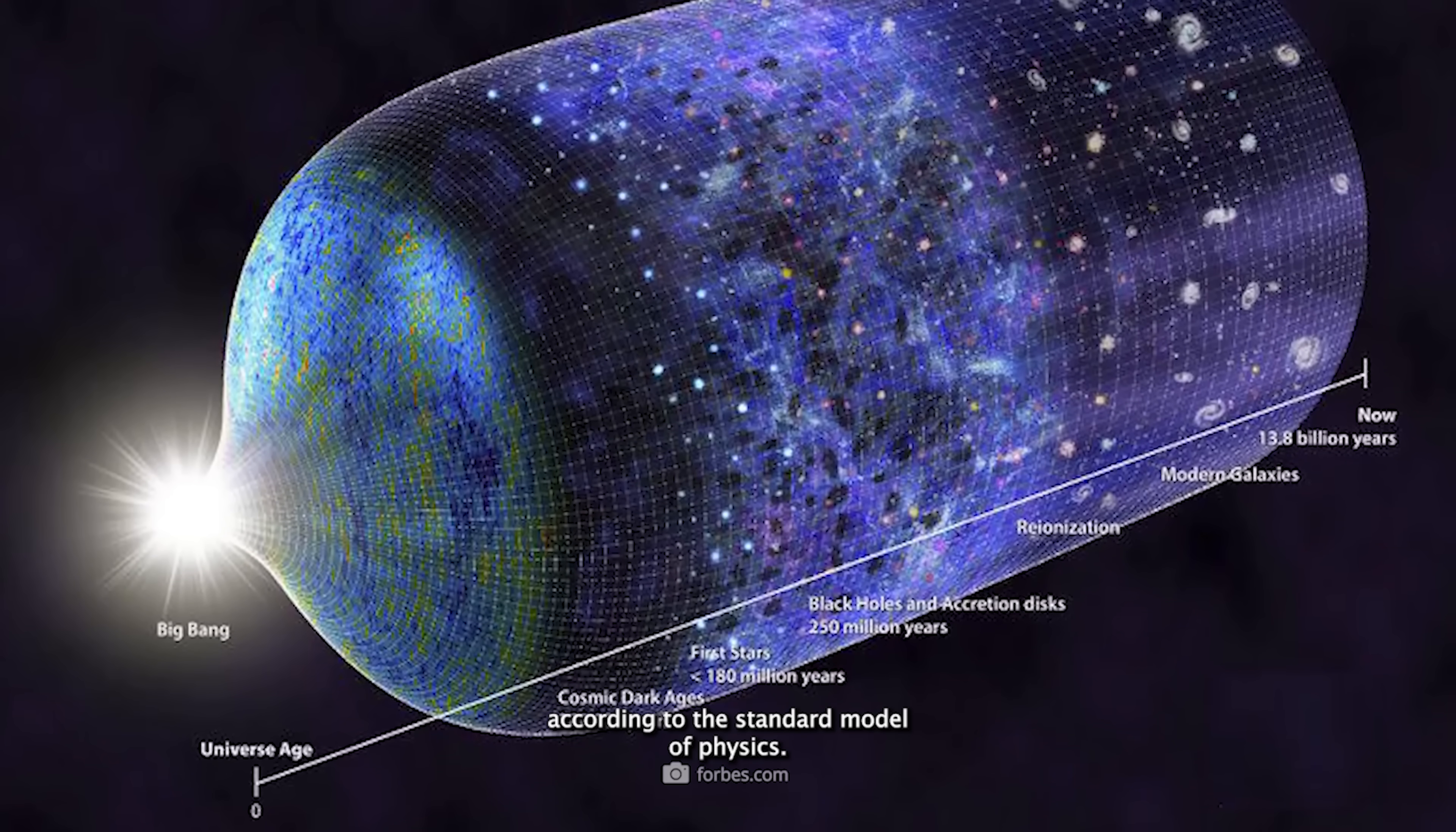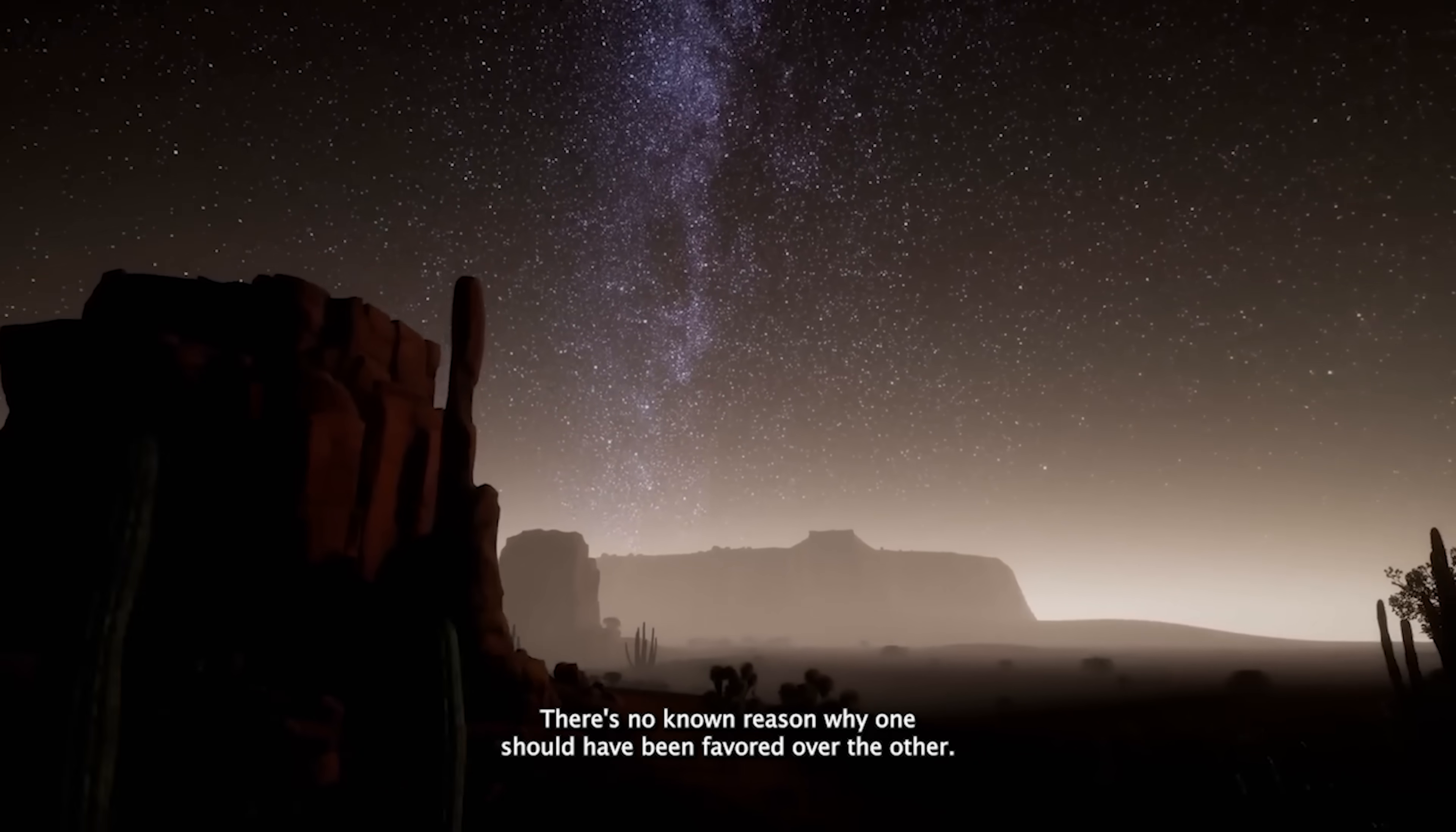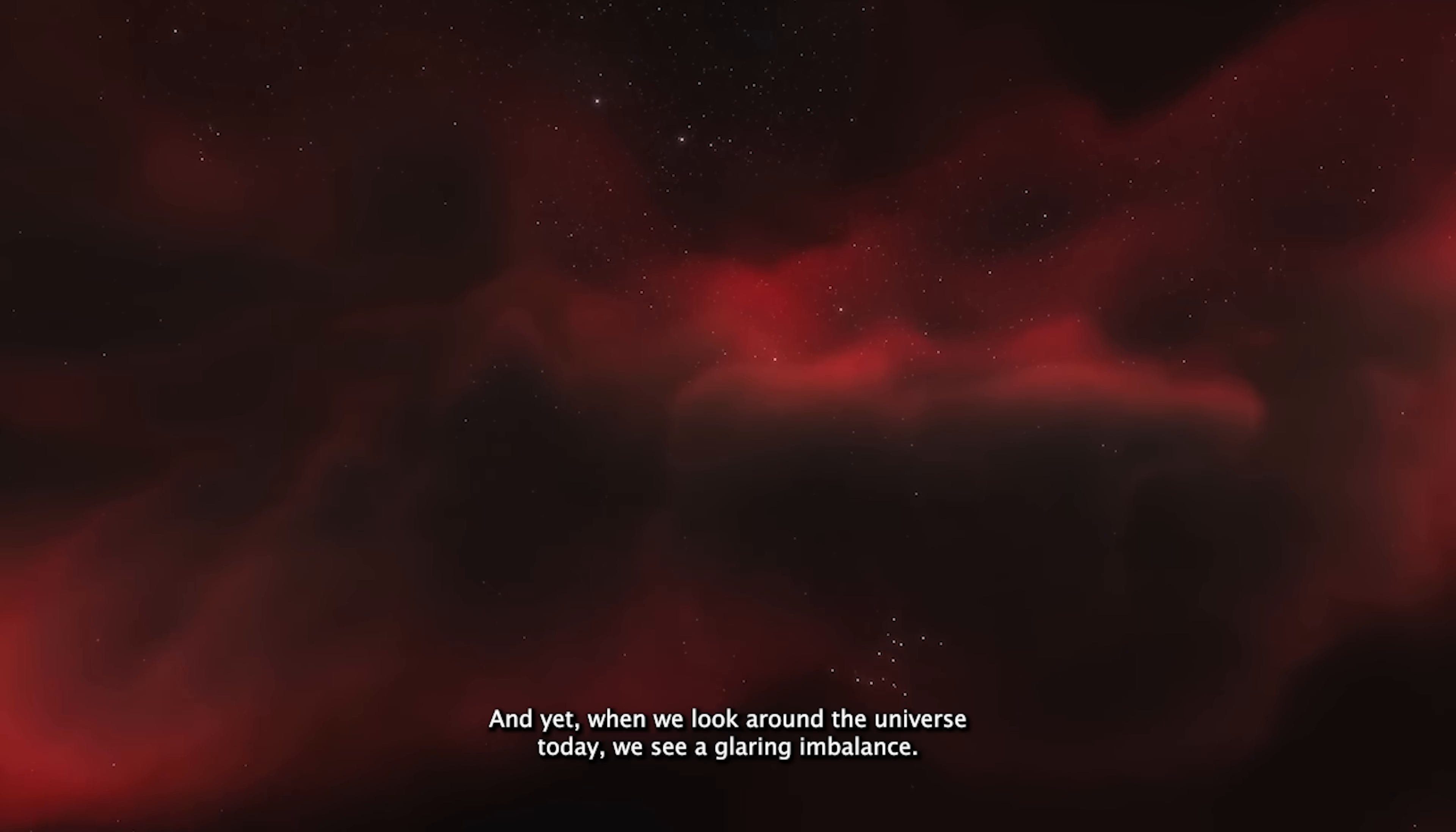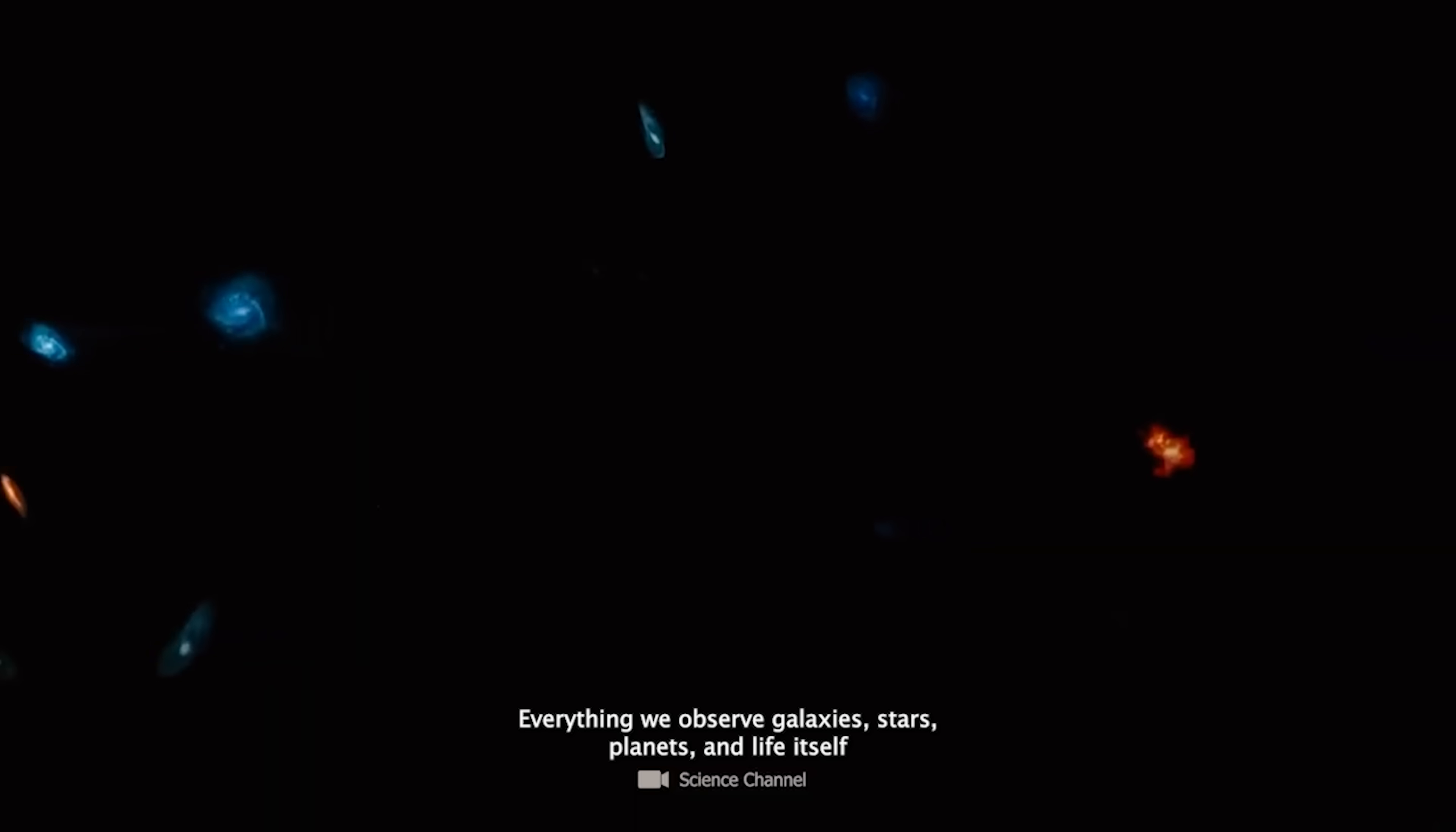According to the standard model of physics, the Big Bang should have produced matter and antimatter in perfectly equal amounts. There's no known reason why one should have been favored over the other. And yet, when we look around the universe today, we see a glaring imbalance. Everything we observe—galaxies, stars, planets, and life itself—is made of matter.